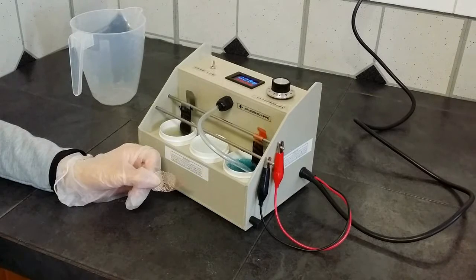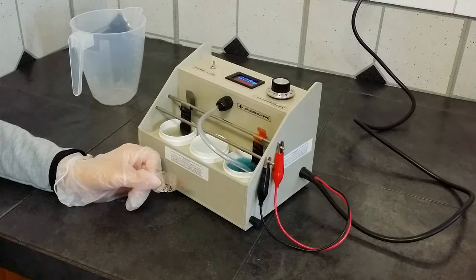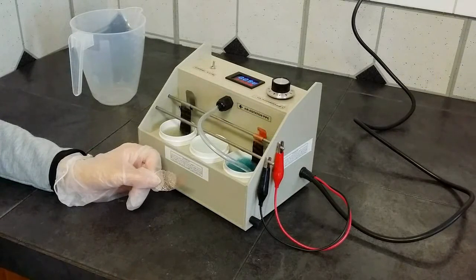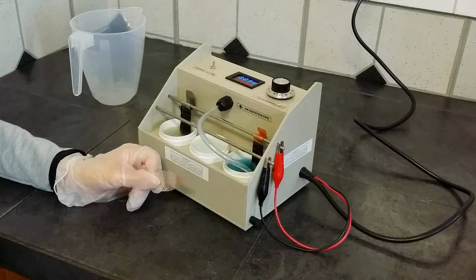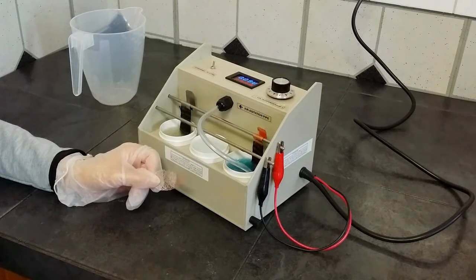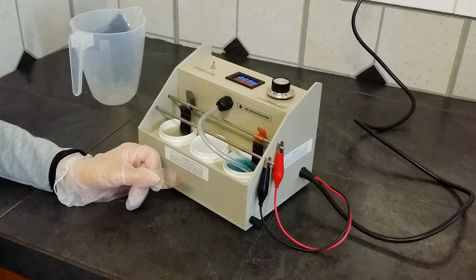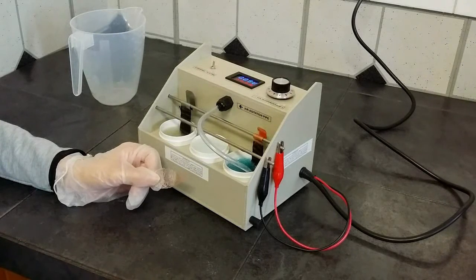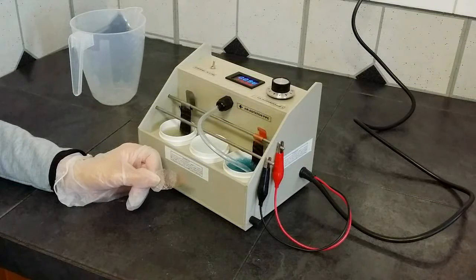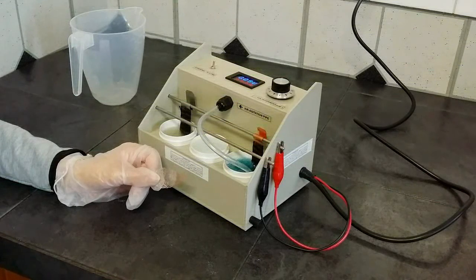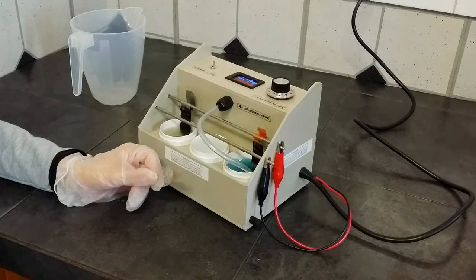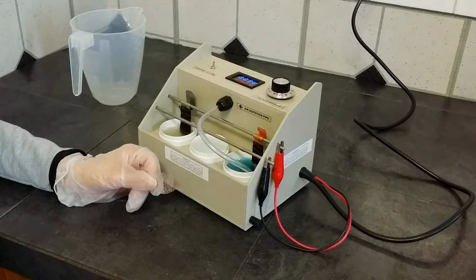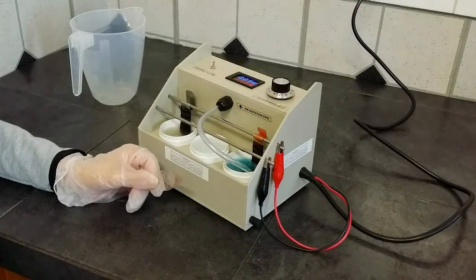We have left our object in the solution for approximately 15 seconds and we have used a power of about 2.5 volts for our object. However, please take into account that these factors depend on the material your object is made of and also on the surface area of your object. So you will need to experiment with each object you are plating to find out what are the perfect conditions for it.